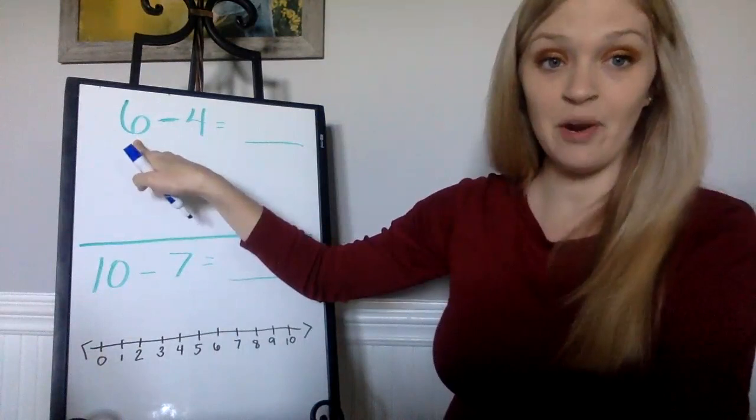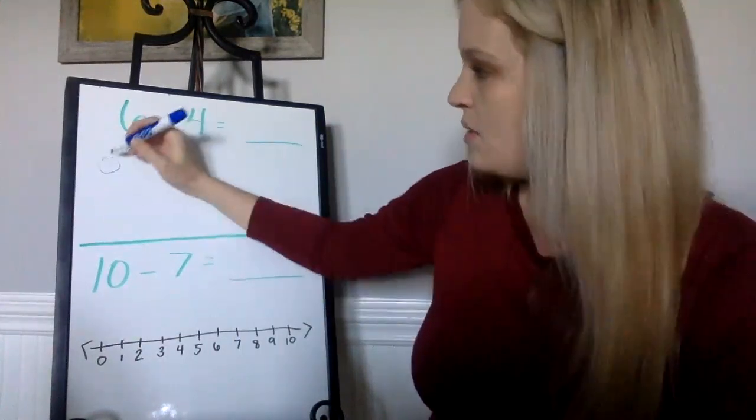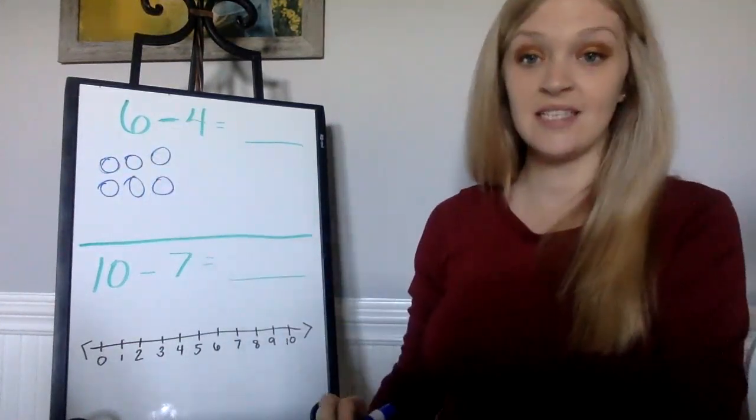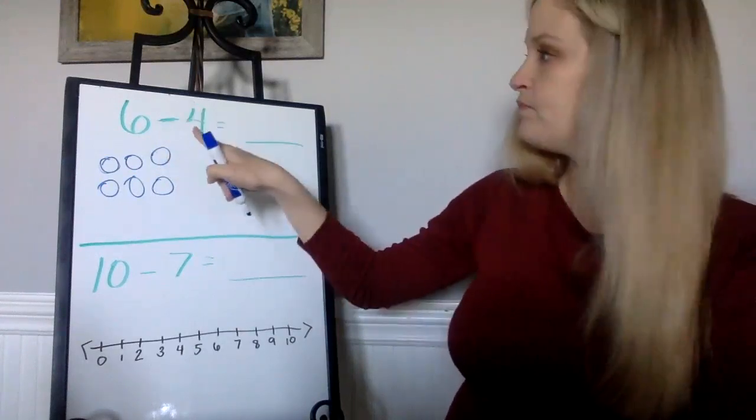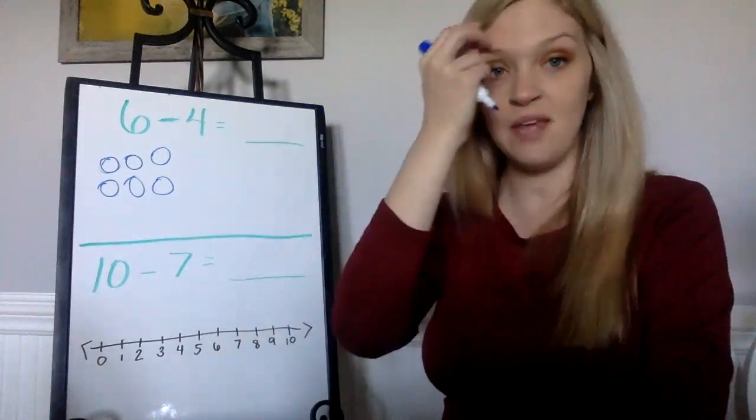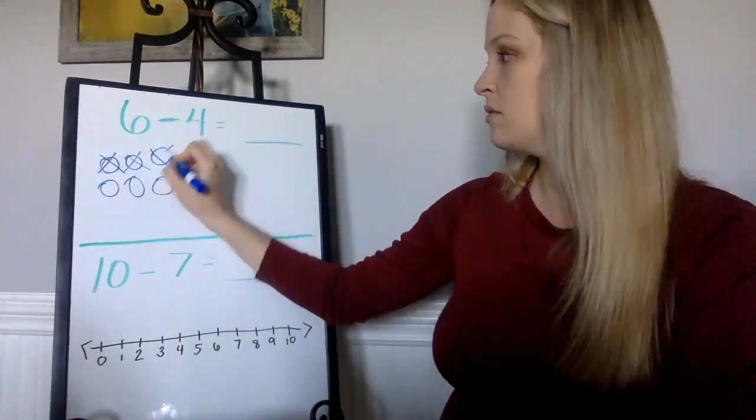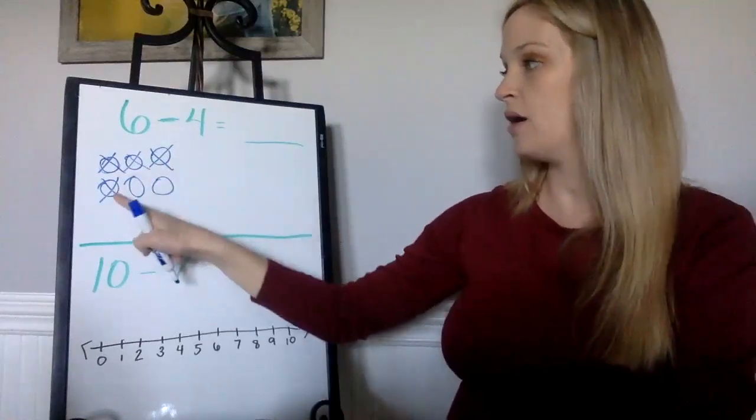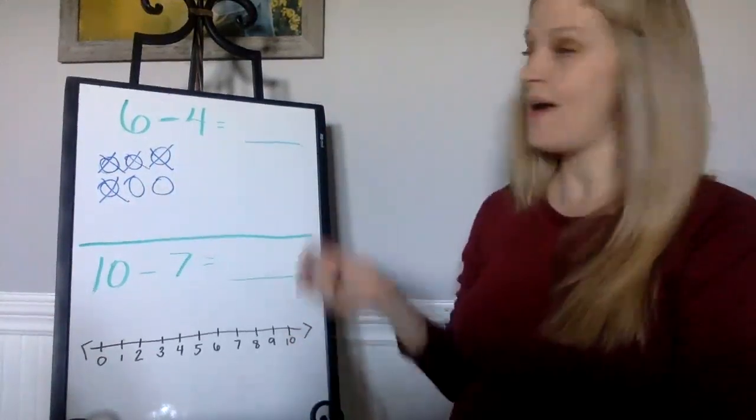I'm going to find my bigger number and that tells me how many circles I'm going to draw, so I have six: one, two, three, four, five, six. So I drew six circles. There's my minus sign, so it's going to tell me how many I'm taking away, which is four. The way I like to do this is I like to put X's on my circles because that tells me they've been taken away. So I'm gonna put four X's: one, two, three, four. I had six minus four. How many do I have left? I have two left.